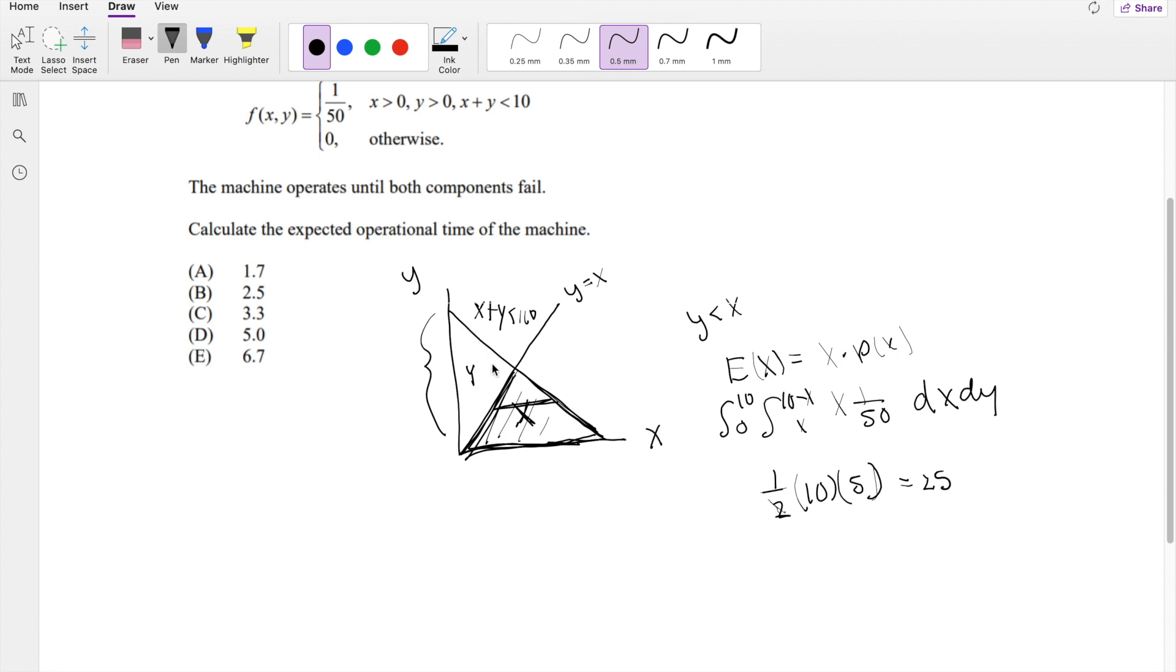And what is the total area of this triangle? Well, this total area is 50, so we know that the expectation of x, this part right here, just this part, is equal to 1 half of the expectation of the whole thing. And what is the expectation of the whole x? Well, because we know that this is uniform, for uniform distribution, expectation of x is just going to be b plus a over 2, so in our case, it's going to be 10 plus 0 divided by 2, so it's going to be 5.